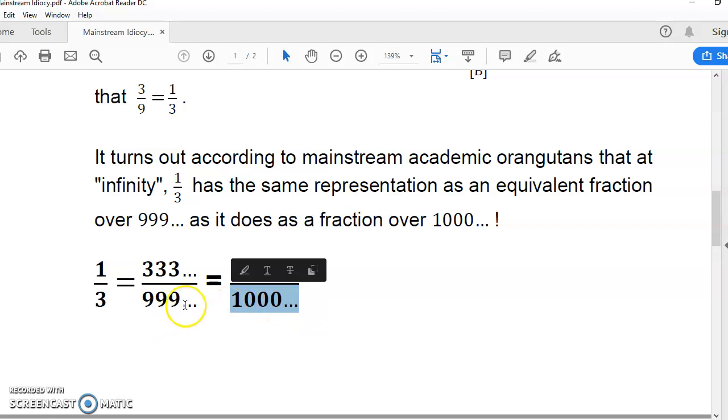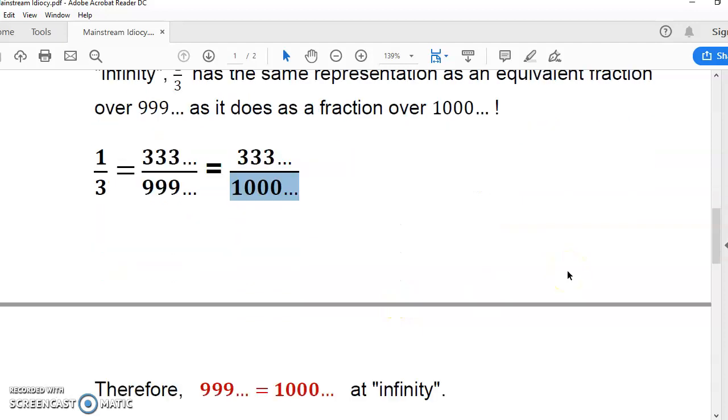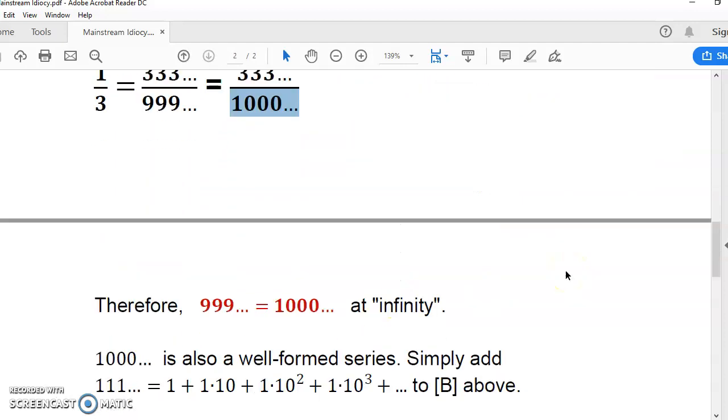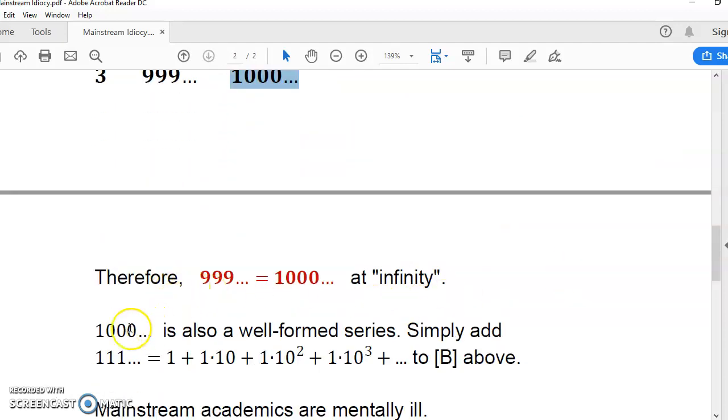And from this equality here, they're implying that this series is the same as this series here, which is outright impossible. Now, you may wonder, is 1000... a well-formed series? Yes, it is.